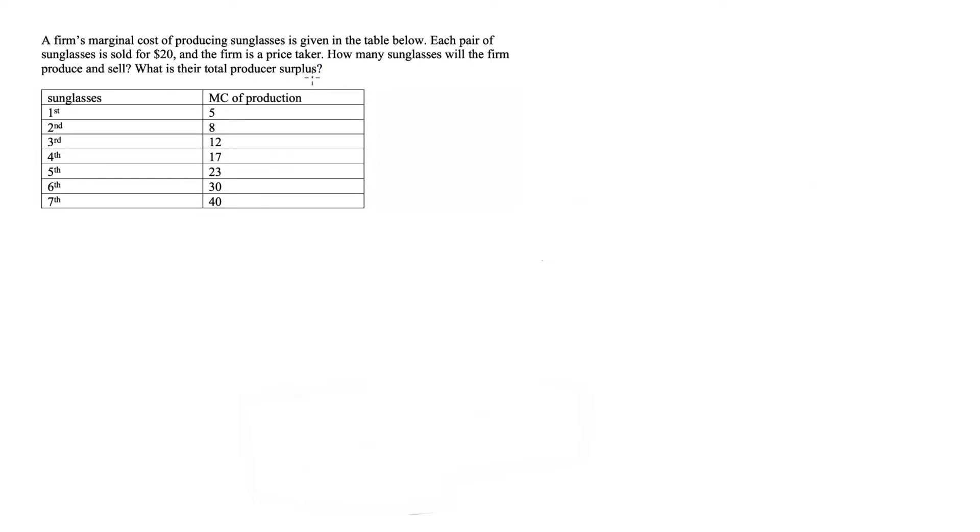We read this table as, well, the marginal cost for producing that first pair of sunglasses is $5, the marginal cost for producing the second pair of sunglasses is $8, $12 for the third pair, etc.